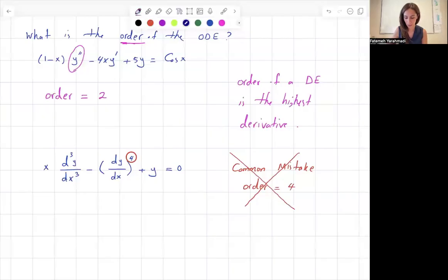So if you want to rewrite this differential equation, this is basically x times the third derivative of y minus y' times y' times y' times y' plus y equals 0. And this guy is not equal to the fourth derivative of y.